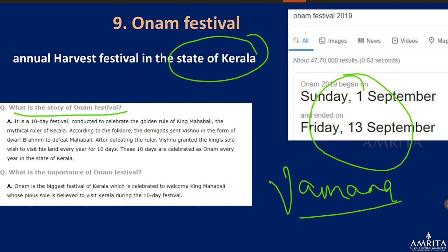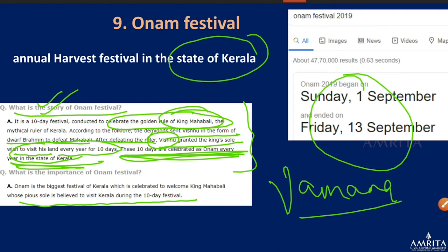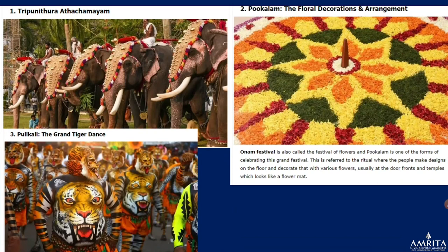Vishnu, in the form of a dwarf, came to defeat Mahabali. After defeating the ruler, Vishnu granted the king's sole wish to visit his land every year for 10 days. These 10 days are celebrated as Onam every year in Kerala. It is believed that King Mahabali visits Kerala during this 10-day festival.